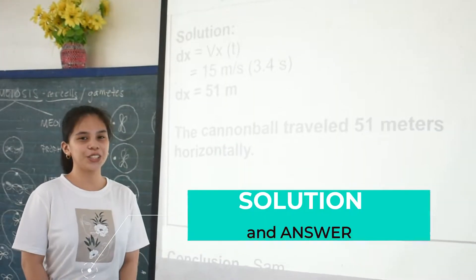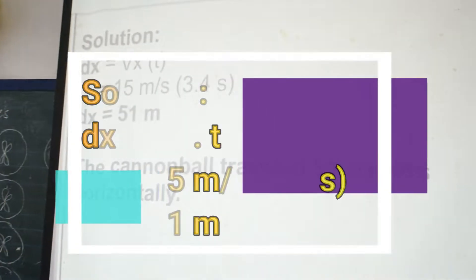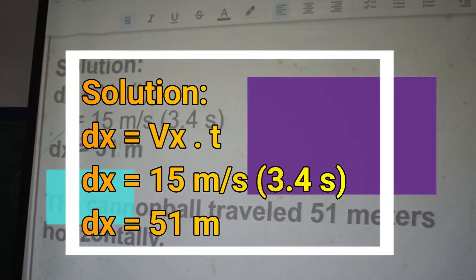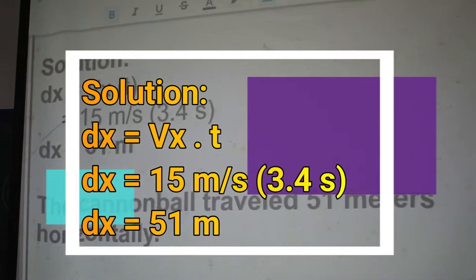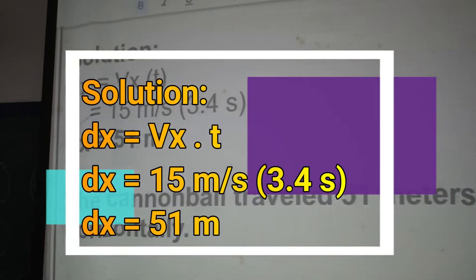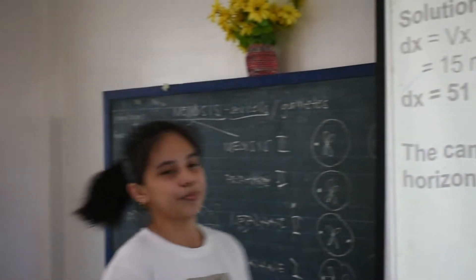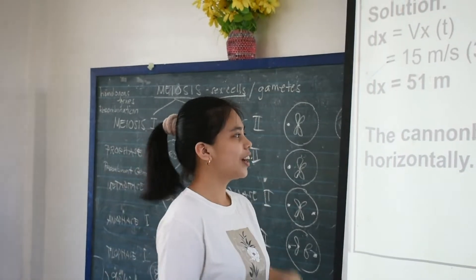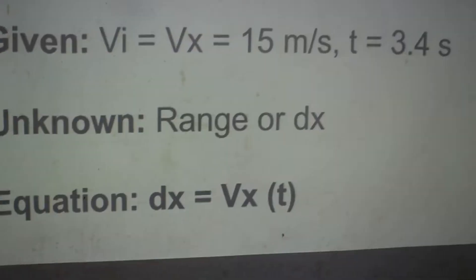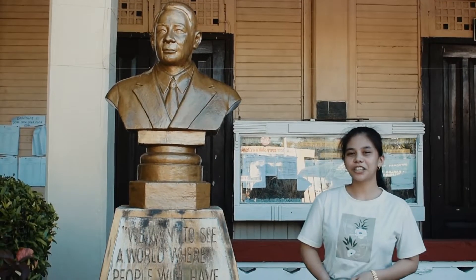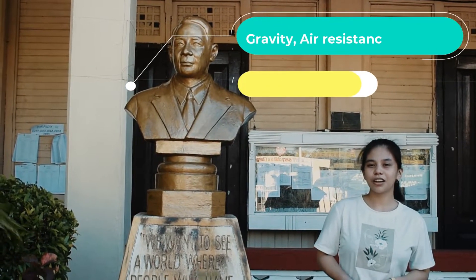Our solution: dx is equal to vx times time. vx is 15 meters per second multiplied by 3.4 seconds, which gives us 51 meters. Therefore, the cannonball travels 51 meters.